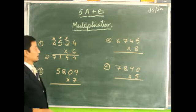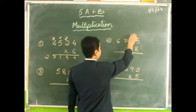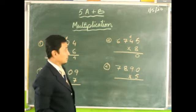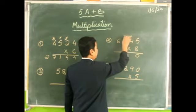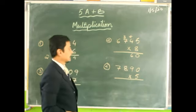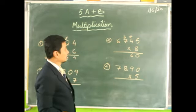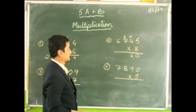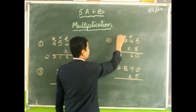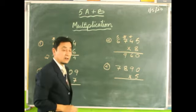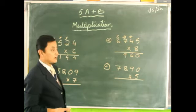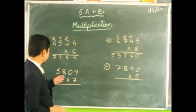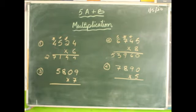Now let's move to the next one: 6745 multiplied by 8. Eight fives are 40, write 0 carry 4. Eight fours are 32; 32 plus 4 is 36. Eight sevens are 56; 56 plus 3 is 59. Eight sixes are 48; 48 plus 5 is 53.